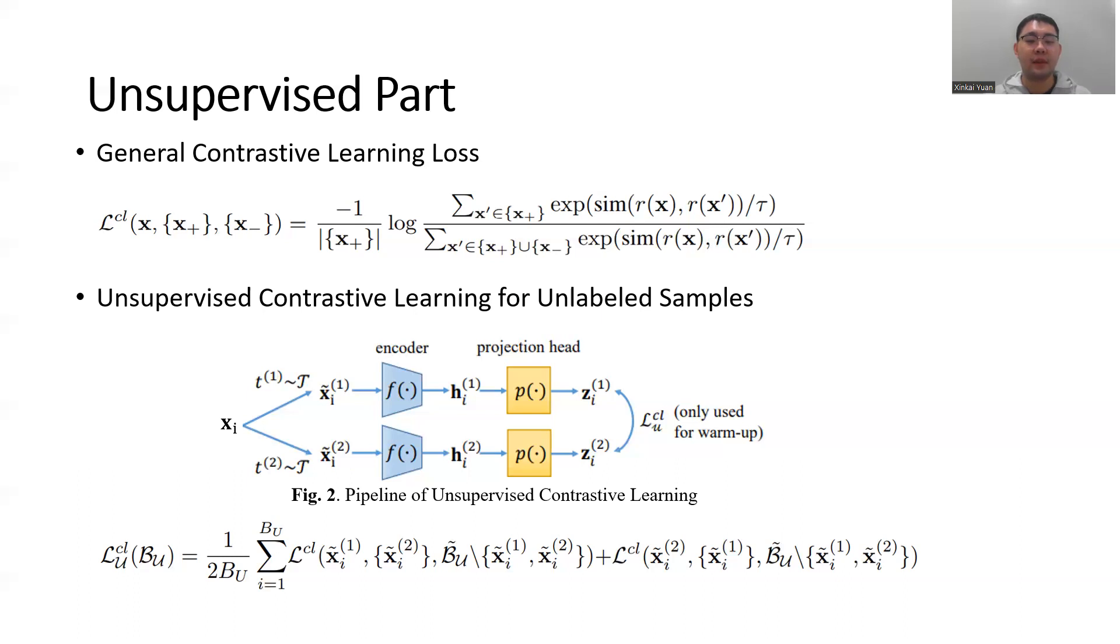Contrastive learning aims to minimize the representation distances between x and its positive samples. In the loss function above, R(x) is the representation of x output from the network, and sim is the similarity function, which measures the representation distances.